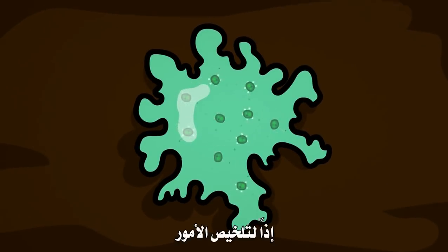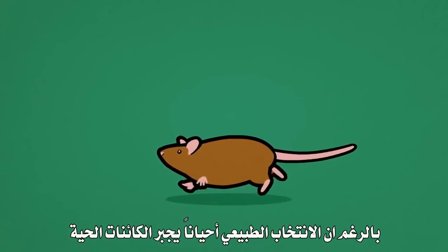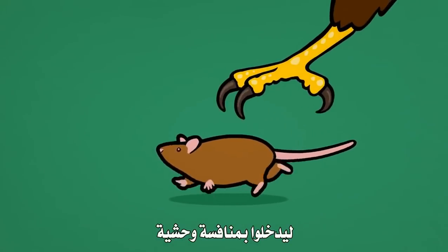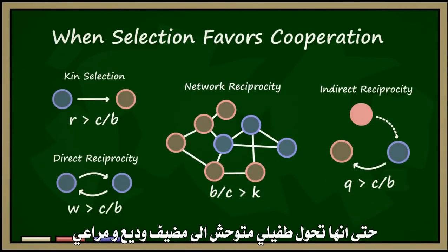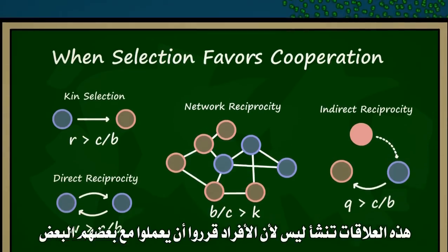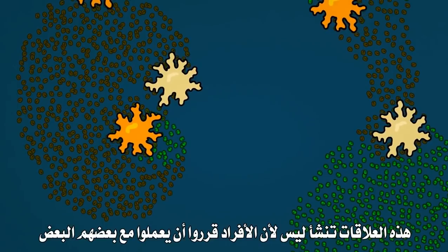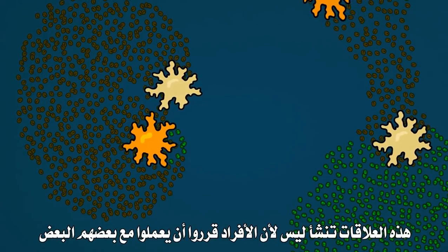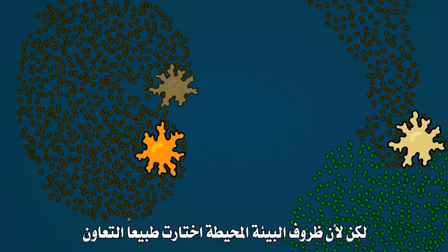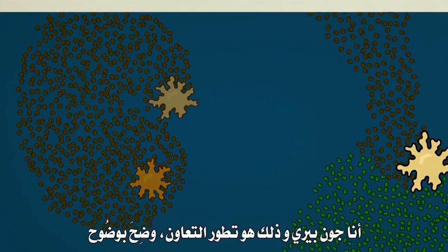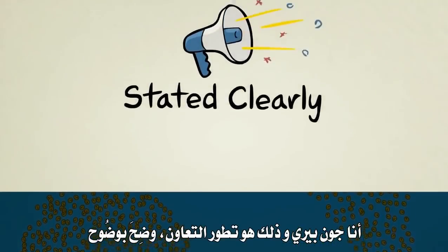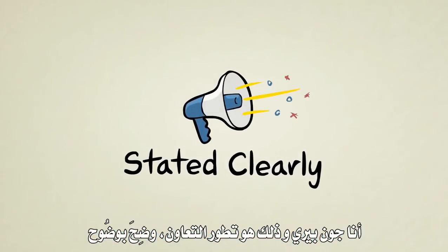So to sum things up: even though natural selection often forces living things into brutal competition, scientists have discovered many situations in which nature favors cooperation — even turning savage parasites into gentle, caring hosts. These relationships develop not because individuals decide to work together, but because the circumstances of the environment naturally select for cooperation. I'm John Perry, and that's the evolution of cooperation — Stated Clearly.